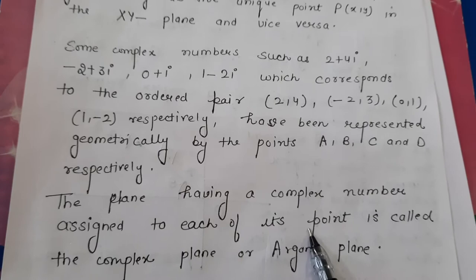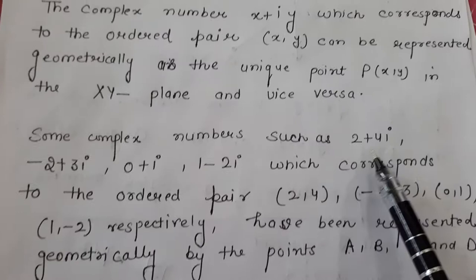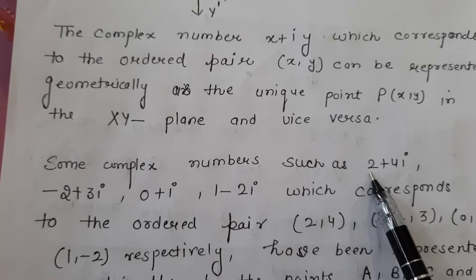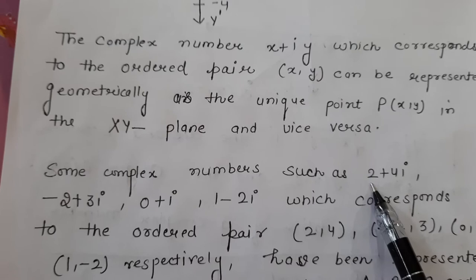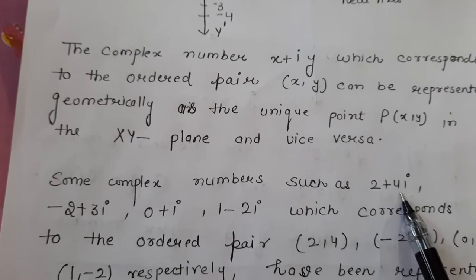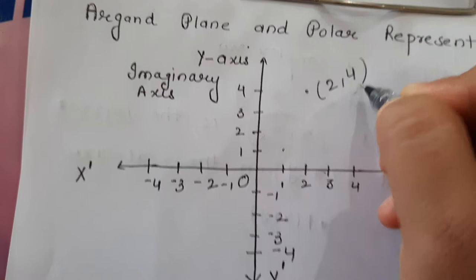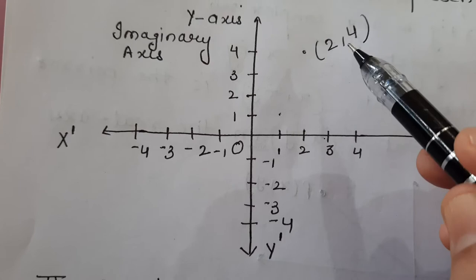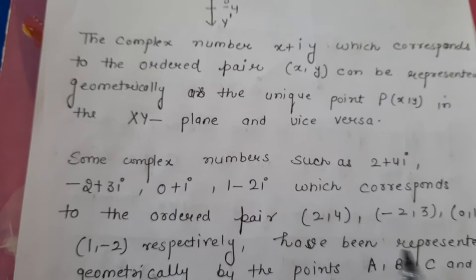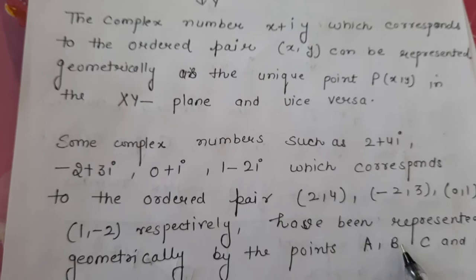The definition of the Argand plane: the plane having a complex number assigned to each of its points is called the complex plane or the Argand plane. For example, to represent 2 plus 4 iota: the real part is 2 and the imaginary part is 4, so along the real axis we take 2 and along the imaginary axis we take 4. Plotting the point (2, 4), let it be point A.